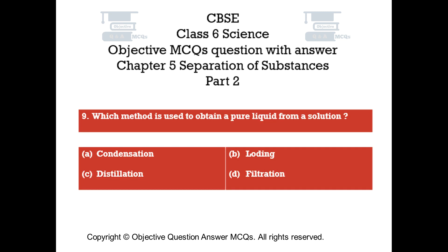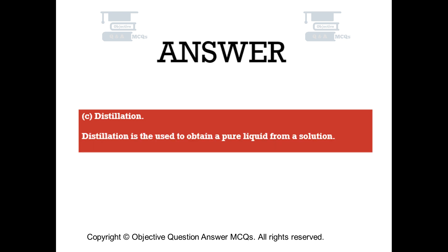Question number 9. Which method is used to obtain a pure liquid from a solution? Option A, Condensation. Option B, Loading. Option C, Distillation. Option D, Filtration. The right answer is Option C — Distillation. Distillation is used to obtain a pure liquid from a solution.